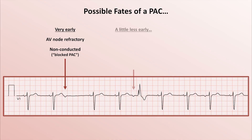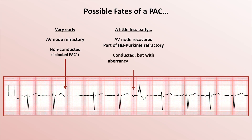If the PAC occurs a little less early, the AV node may be recovered, but a part of the His-Purkinje system may still be refractory. So the P-wave is conducted but with aberrancy, meaning abnormal ventricular depolarization. Because under normal circumstances the right bundle branch has a longer refractory period than the left, such a beat will have a right bundle branch block morphology to it. This phenomenon is known by the eponym of Ashman aberrancy.